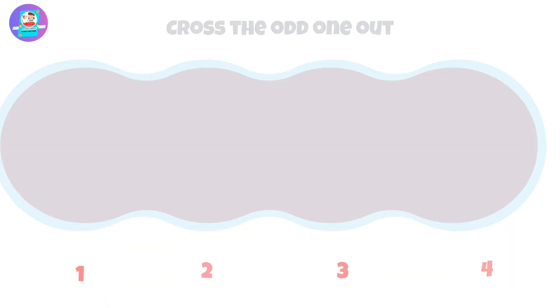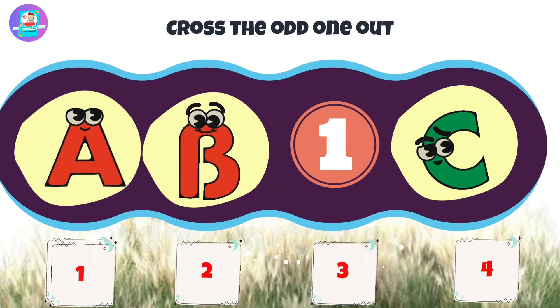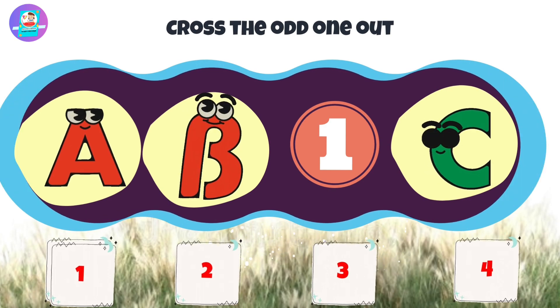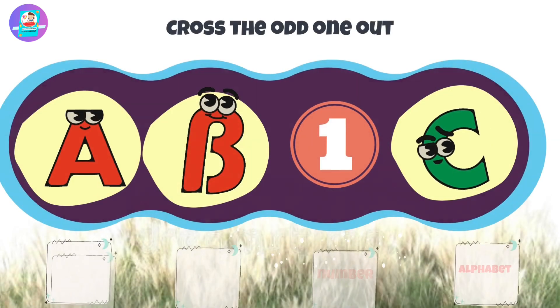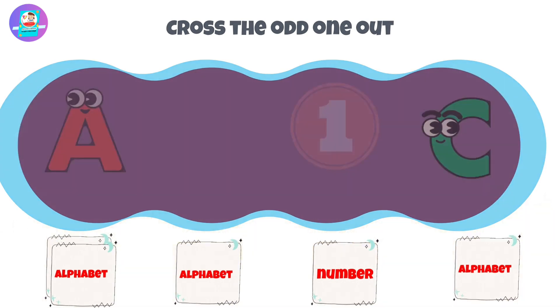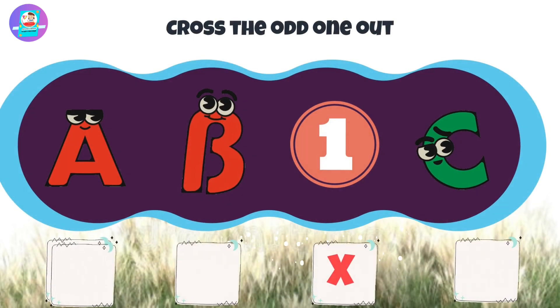Okay, let's check first. When we see here we have 3 alphabets and 1 number. There is a number that is odd. So put a cross on this number.